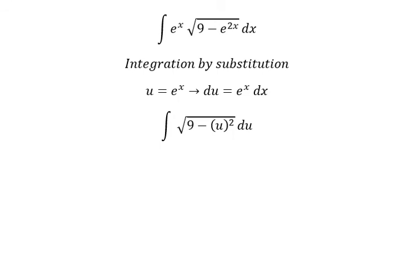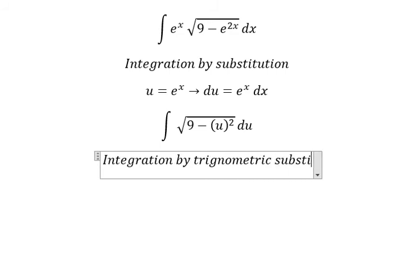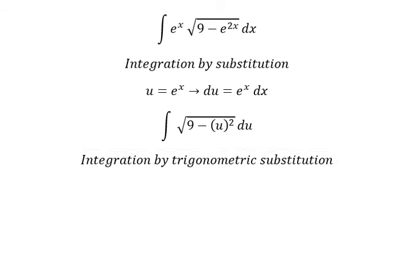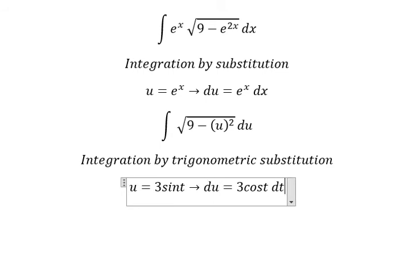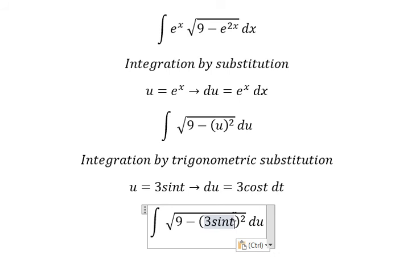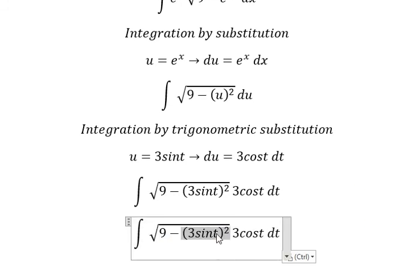Next we need to use integration by trigonometric substitution. So I will put u equal to 3 sine t. If we differentiate both sides, we have du equals 3 cosine t dt. This one we put in here, 3 cosine t dt we change by du. This one we have 9 sine t squared.